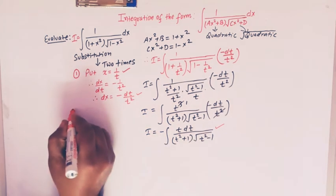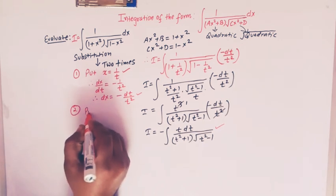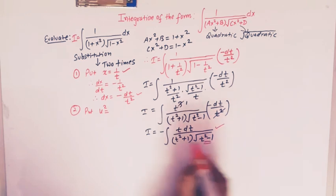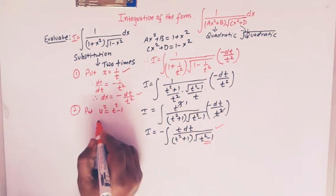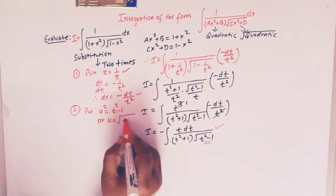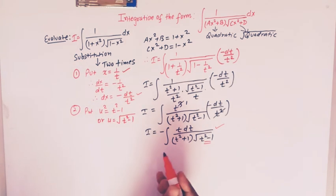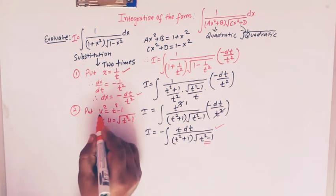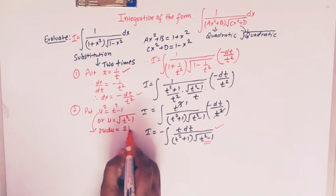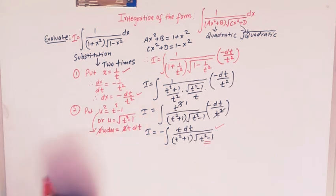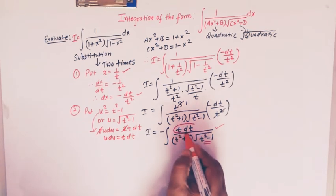In the second step of substitution, we substitute u² = t² − 1, or equivalently u = √(t² − 1). So we are changing the variable from t to u. Differentiating both sides gives 2u du = 2t dt, and the 2's cancel, so u du = t dt.